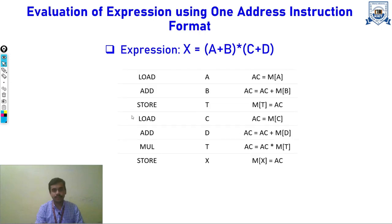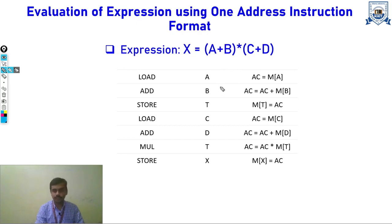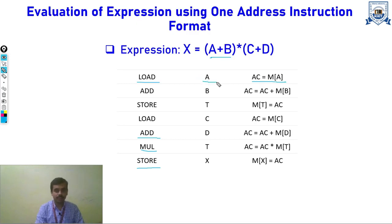Now we go to the 1-address instruction format. Here we implicitly know there is an accumulator which holds one of the operands. We have a load instruction for moving a value to the accumulator, a store instruction for storing, and different instructions for operations like addition and multiplication. For A plus B, we load A into the accumulator — we have stored only one address, that is A. Then we add B: the value in the accumulator is added with operand B and the result is stored back in the accumulator.